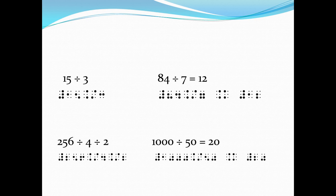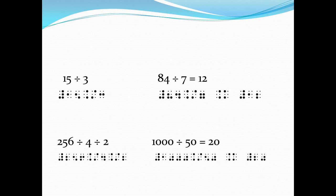For our second division example, we have 84 divided by 7 is equal to 12. In Nemeth, we write the numeric indicator, digits 8 and 4, the divided by sign — dots 4 and 6 on the first cell and dots 3 and 4 on the second cell — then 7, and a space before the equal sign. The equal sign uses dots 4 and 6 on the first cell and dots 1 and 3 on the second cell, followed by a space, then the numeric indicator and digits 1 and 2.